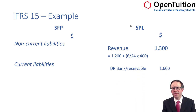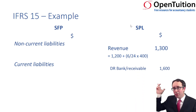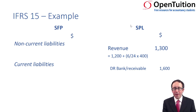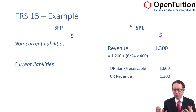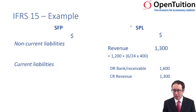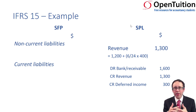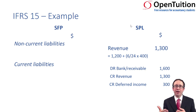In terms of the journal entries: you debit the bank or debit the receivable, depending upon whether you've received the cash or are expecting to receive it. We credit revenue with $1,300. The other entry needed is a credit entry for $300 as deferred income — because the money has been received or is expected to be received, but the revenue won't be recognised until that future accounting period.